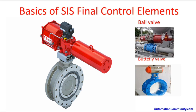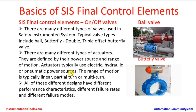There are many different types of actuators defined by their power source and range of motion. Actuators typically use electric, hydraulic, or pneumatic power sources. However, across the process industry, pneumatic actuators are most commonly seen as they are more reliable and quick-acting. All these different designs have different performance characteristics, different failure rates, and different failure modes. These internal characteristics are listed by each respective manufacturer in their safety manual.